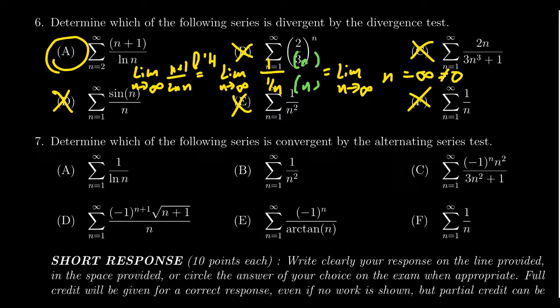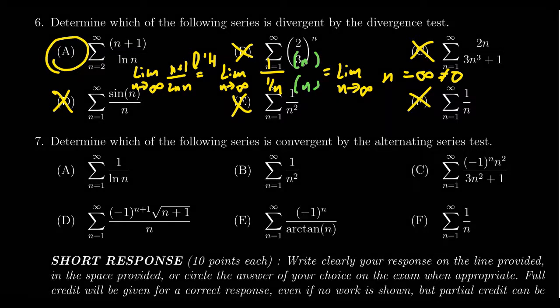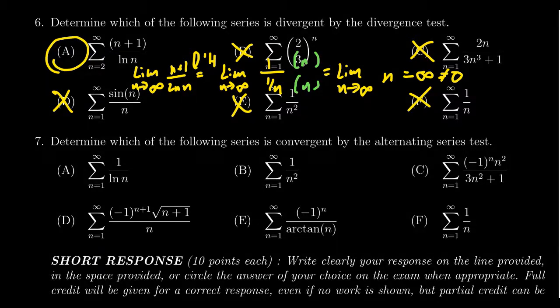So we actually computed the limit from the beginning. We actually could have seen that this limit, the limit of the sequence, doesn't go towards zero. So it is divergent by the divergence test. But process of elimination is an appropriate tool to use on this one as well.